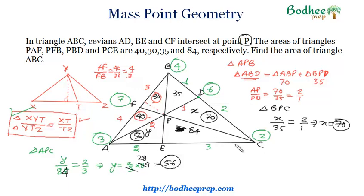So the total area of triangle ABC would be the sum of all these six values, which comes out to be 315. So this is the answer for this question.